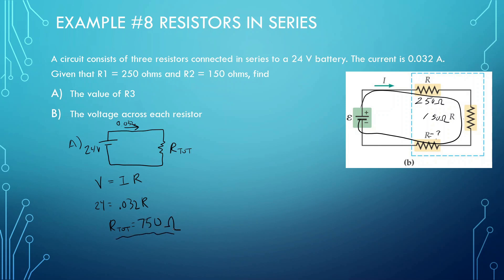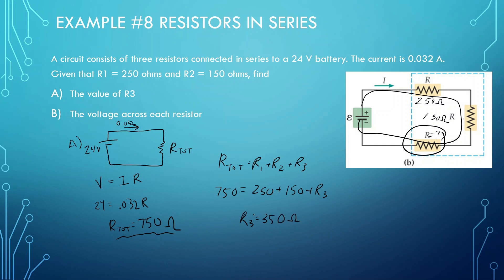That's the total — we want to find just R3. R total equals R1 plus R2 plus R3. So 750 equals 250 plus 150 plus R3. Since 250 plus 150 is 400, R3 is going to equal 350 ohms.